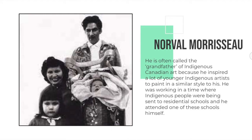When he was working, it was a time where Indigenous people were still going to residential schools, and he actually attended one of these schools himself. In this picture, you can see Norval Morisot in the back and there's his wife and two daughters in this photograph.